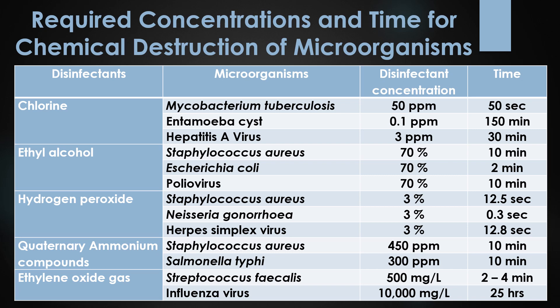Finally, ethylene oxide gas. 500 mg per liter is required for the destruction of Staphylococcus faecalis, requiring 2 to 4 minutes. 10,000 mg per liter is required for the destruction of influenza virus, requiring 25 hours for destruction.